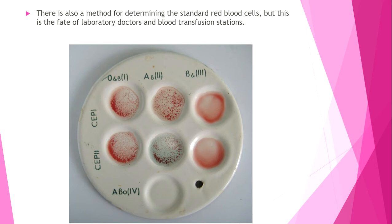On the plate you can see where, using standard serums, we have reactions of hemagglutination. In the first and second wells, we see that blood is broken down into small pieces, indicating a positive agglutination reaction.